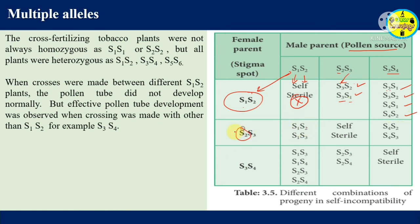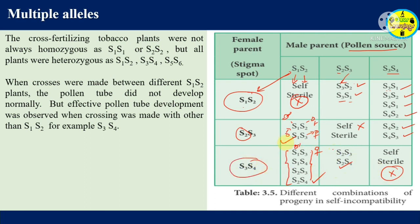In the second condition example, stigma has S1S2 and pollen has S2S3 — two comes from maternal side, three is from paternal side — allowed. Similarly, one from paternal and three from maternal — allowed. But if both pollen alleles match the stigma, they are the same — not allowed. If stigma is S3S4 and pollen brings S1 and S3, one is new so it's partially allowed — when alleles are different, fertilization occurs.